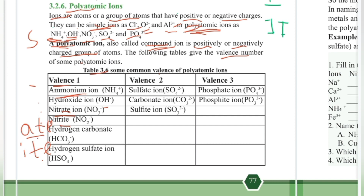The hydrogen carbonate ion has a valency number of 1. Valency 2 includes the sulfide ion, carbonate ion, and sulfide ion.